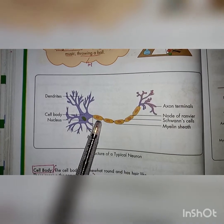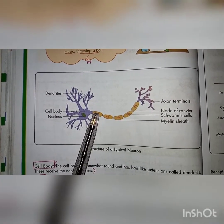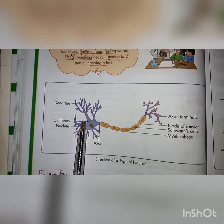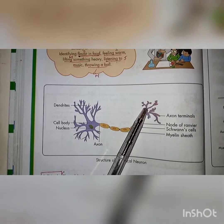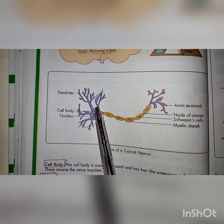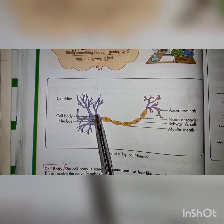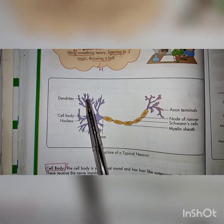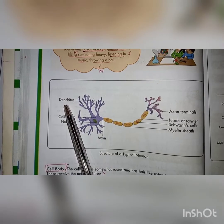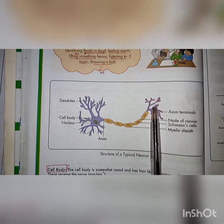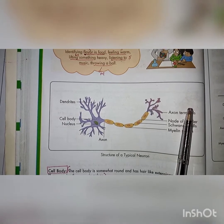Here you can see a diagram showing the structure of a typical neuron. Basically it has two ends — one end has dendrites and the other end has terminals. Where the dendrites are present, there is a cell body with a nucleus. The dendrites are extensions of the cell body which can receive messages.